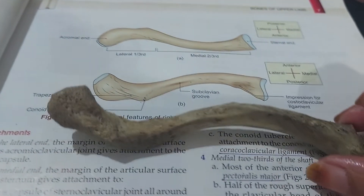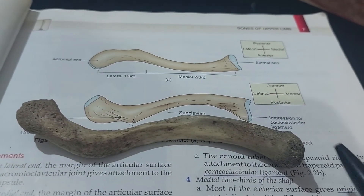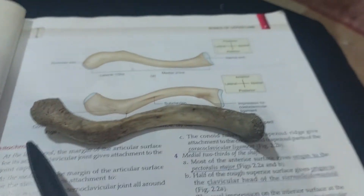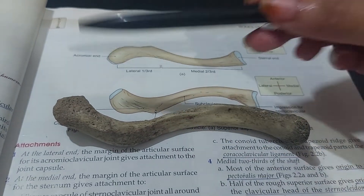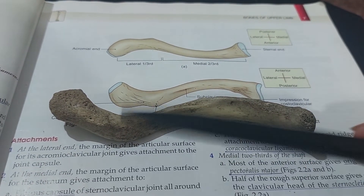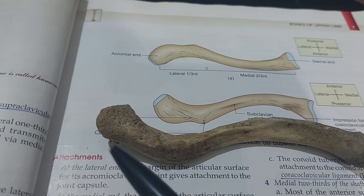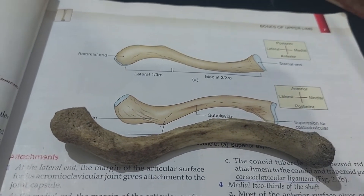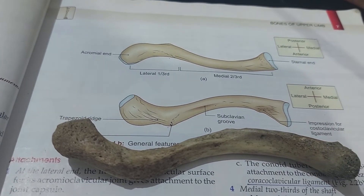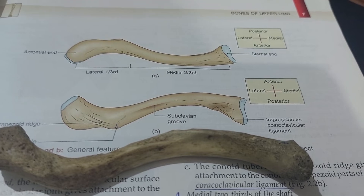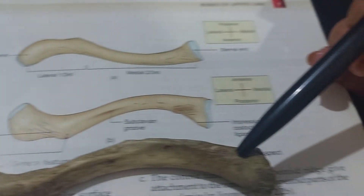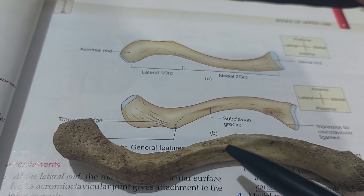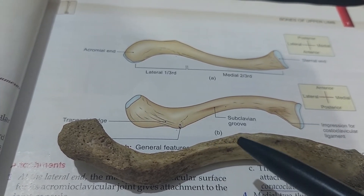Flipping the bone upside down shows the inferior surface. The medial or sternal end is here, the lateral or acromial end is here, with anterior and posterior surfaces visible. On the inferior surface we can see the impression for the costoclavicular ligament, and the subclavian groove, which gives insertion to the subclavian muscle.